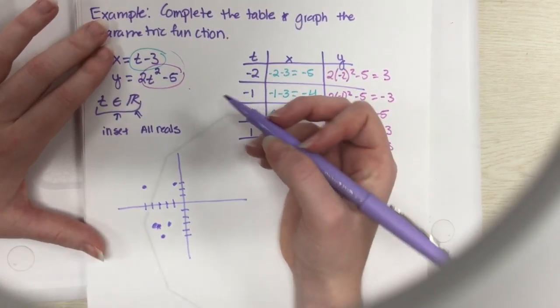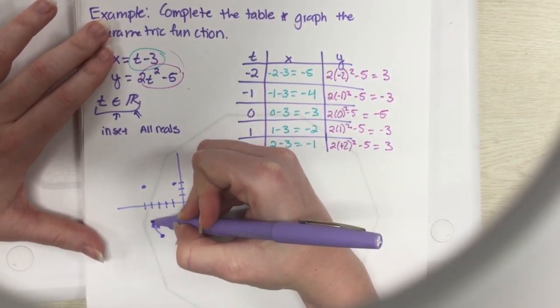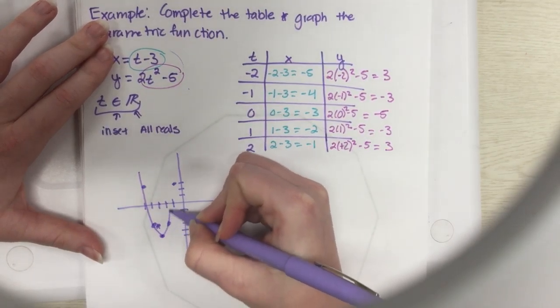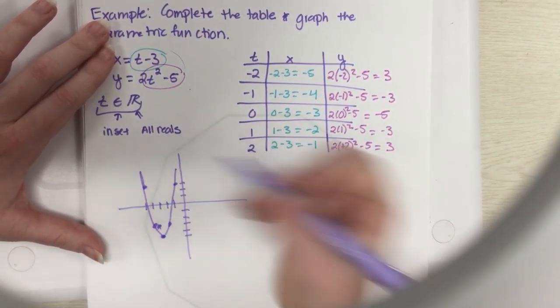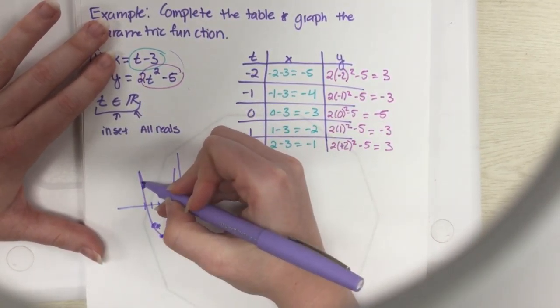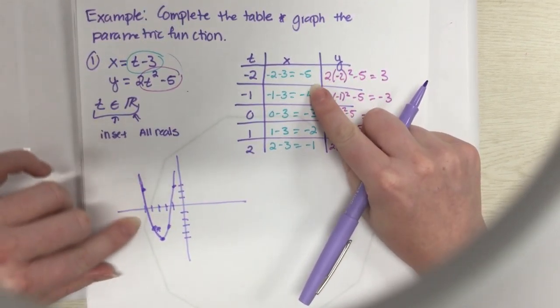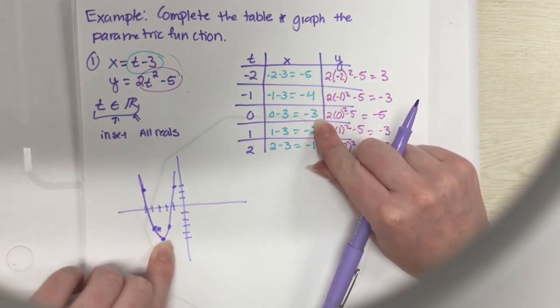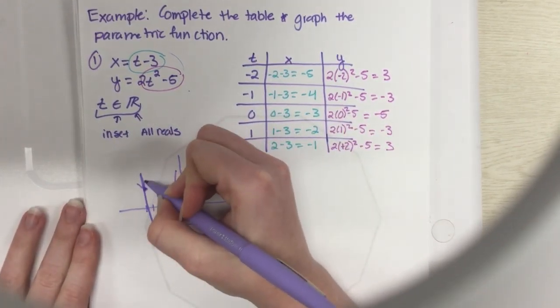Hopefully you're noticing that looks like a parabola, and it is a parabola. We have this parametric equation is the equation for a parabola. And so this one goes like this, and it goes this way.